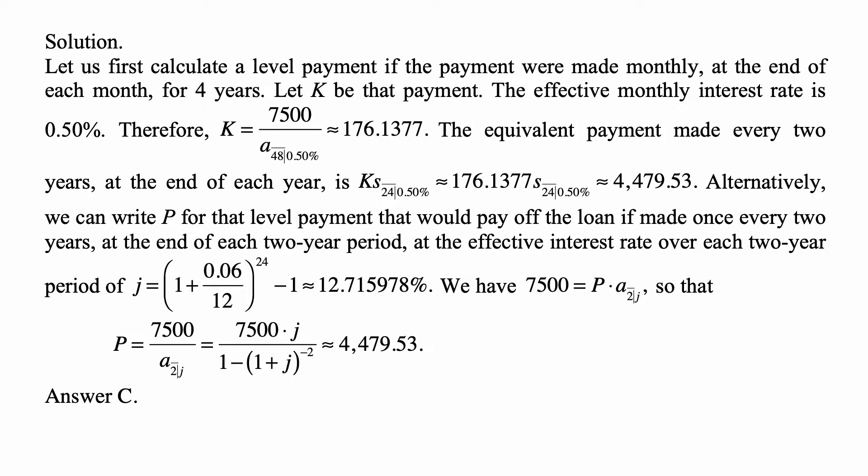Then 7500, the amount of the loan, equals P times A angle 2 at the interest rate J. So P equals 7500 divided by A angle 2 at J.